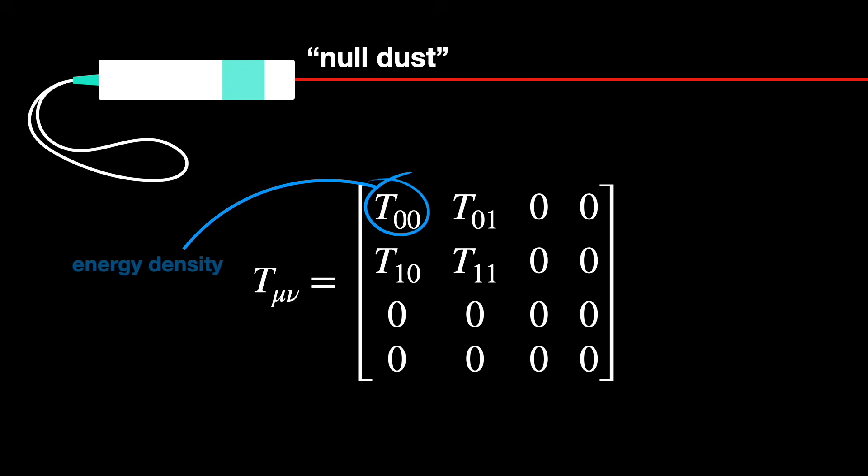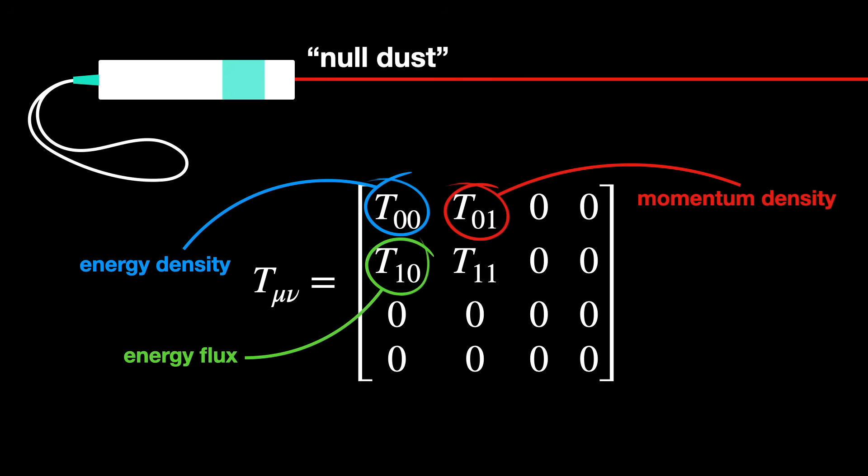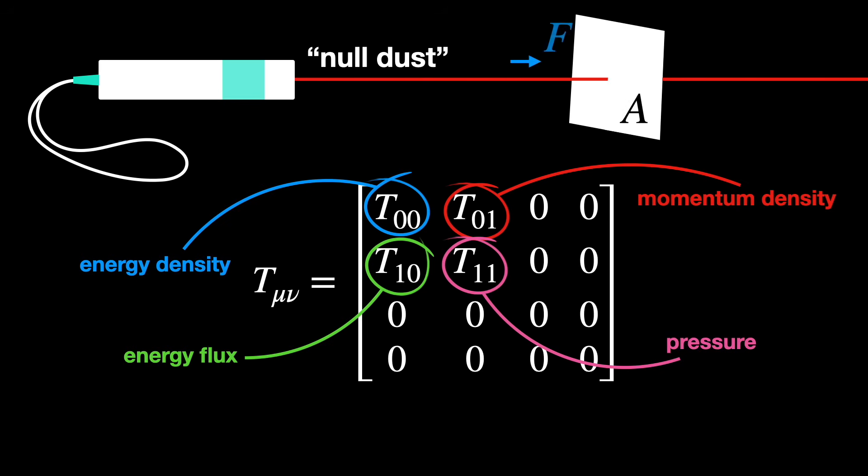This is the energy density, present at that point in space. This one is the momentum density, in the x-direction. And this is the energy flux. And this right here is the pressure in the x-direction, so the amount of force per unit area being exerted on a surface perpendicular to the x-axis.